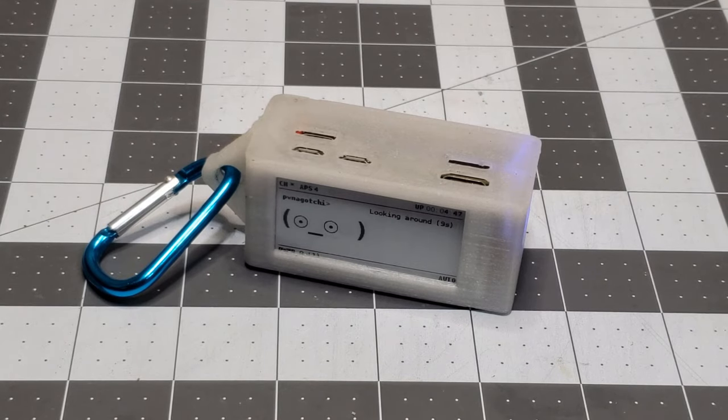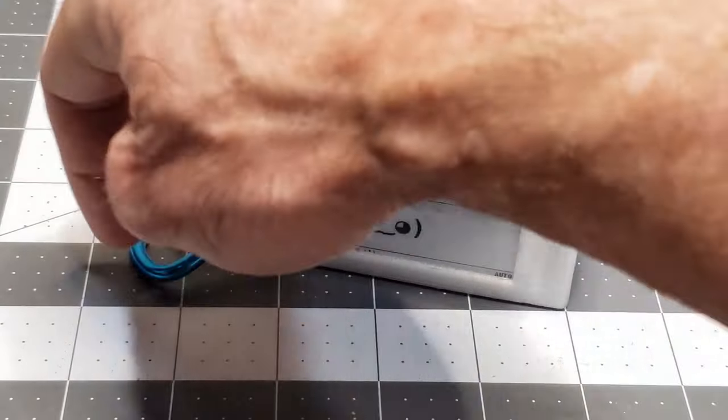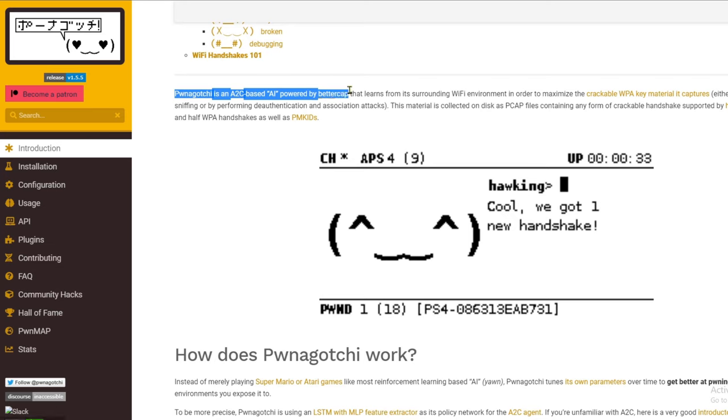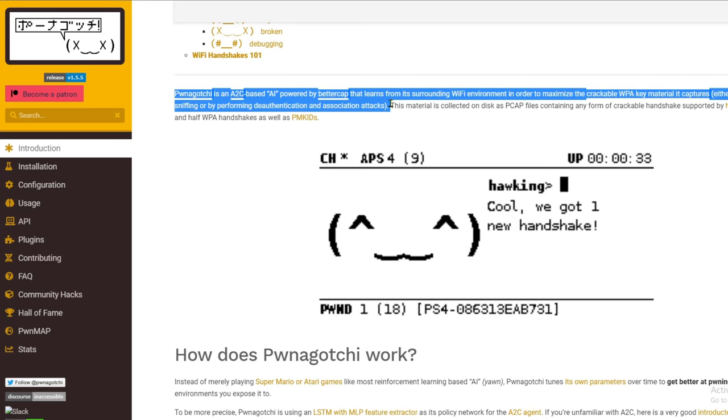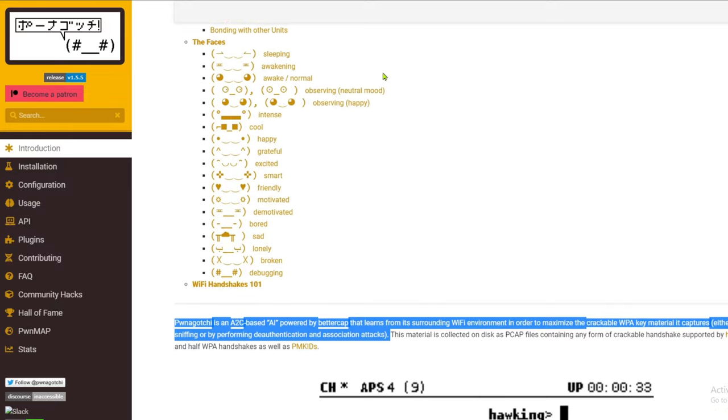A Pwnagotchi, according to the pwnagotchi.ai website, is an A2C-based AI powered by BetterCap that learns from its surrounding Wi-Fi environment in order to maximize the crackable WPA key material it captures.